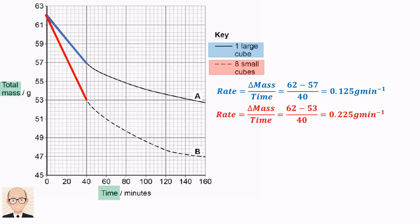The total mass of the eight small cubes changes from 62 grams to 53 grams over the same time, giving a rate of 0.225 grams per minute.